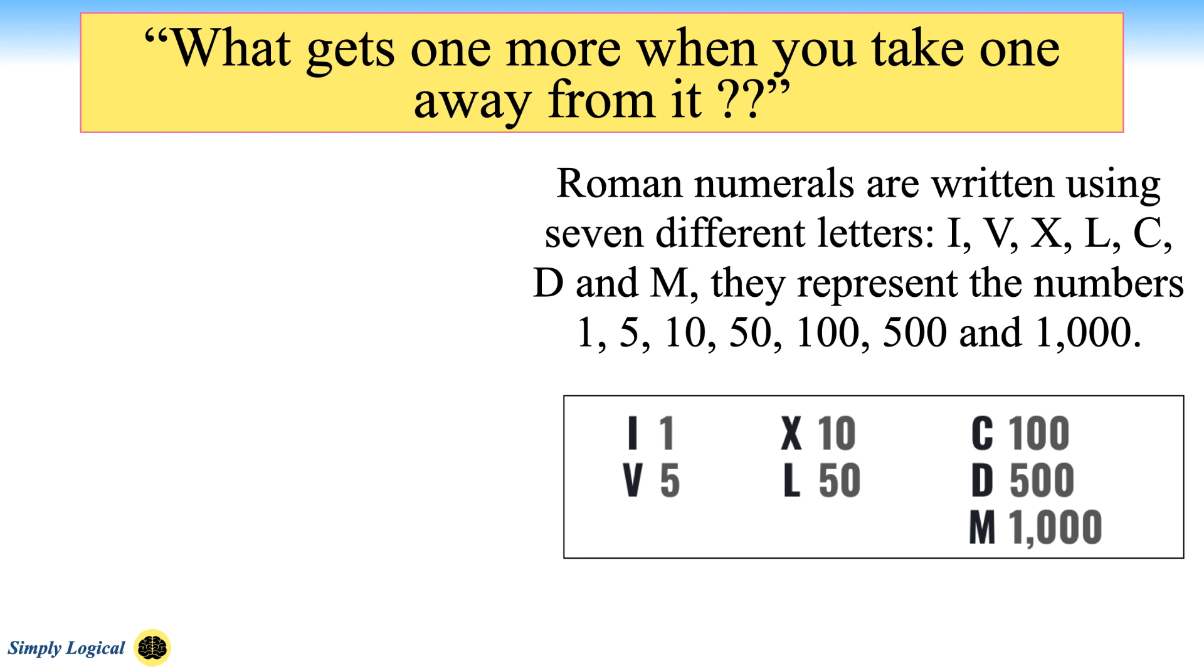We use these seven letters to make up thousands of others. For example, the Roman numeral for 2 is written as II, but 4 is not written in the same way. Instead, the subtraction principle is used. The number 4 is written as IV.